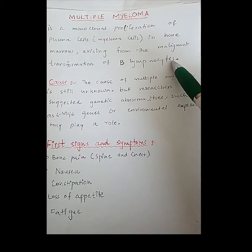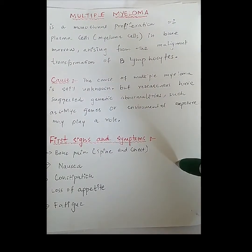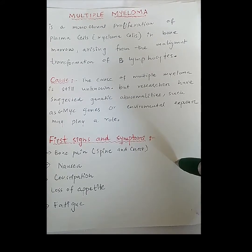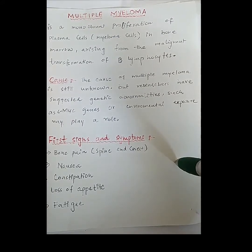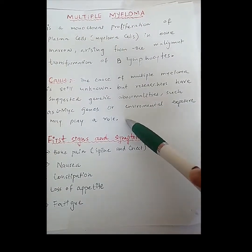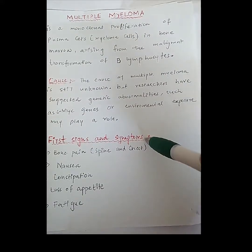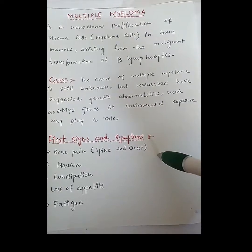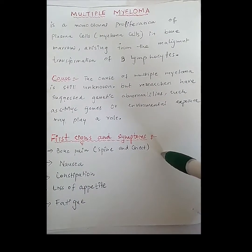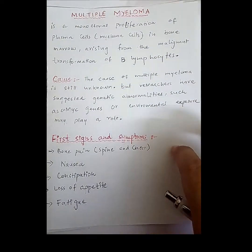The cause of multiple myeloma is still unknown, but researchers have suggested that genetic abnormalities and environmental exposure may play a role. If there is a family history of multiple myeloma, there is a chance it will be passed down to the next generation.